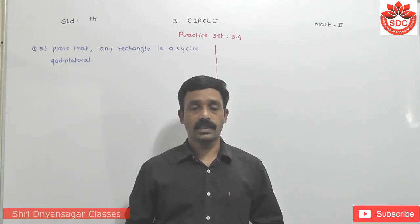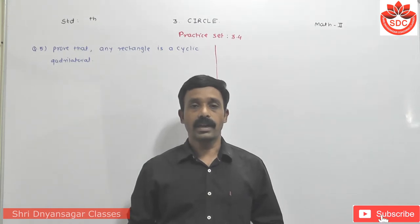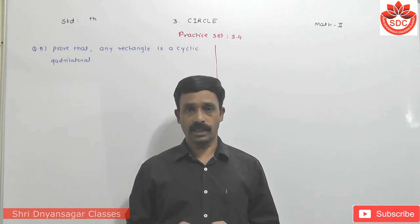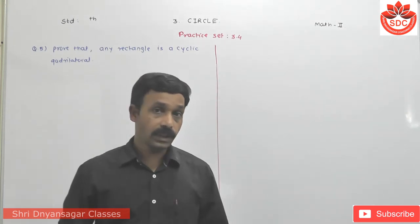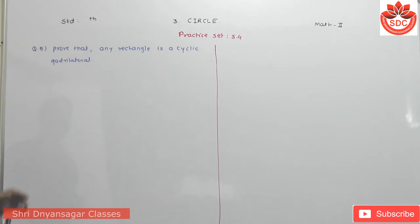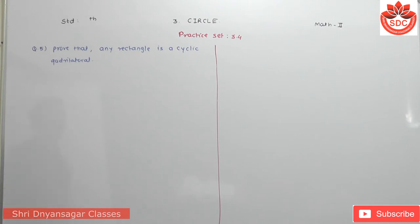Welcome to Srinyaan Sahar Poaching Classes YouTube Channel. Today we take the next examples of the practice set 3.4 of chapter 7. Today's first question, question number 5, is: prove that any rectangle is a cyclic quadrilateral. Very important, but a simple question.